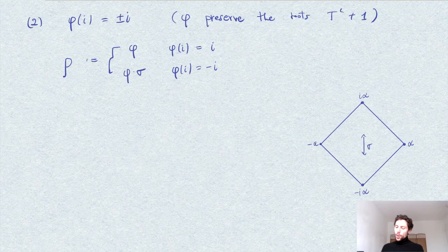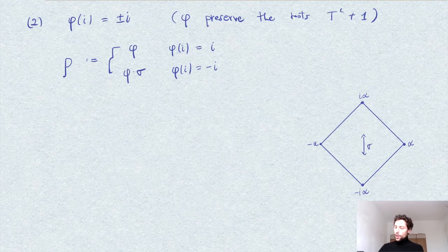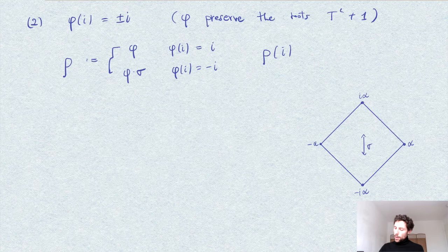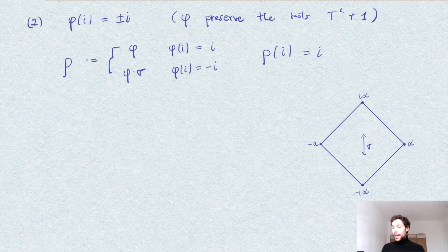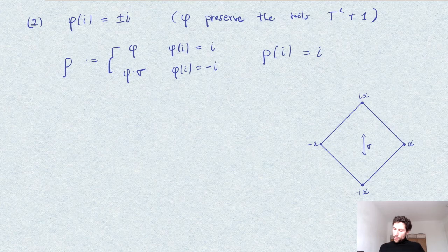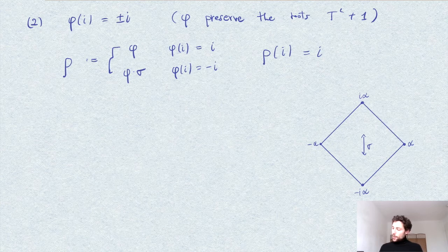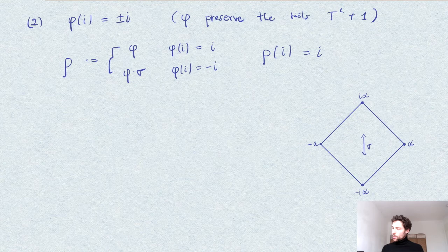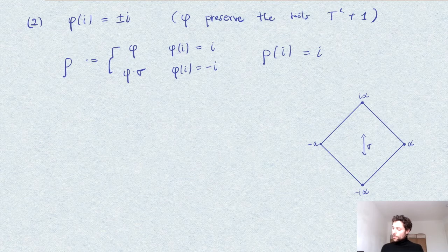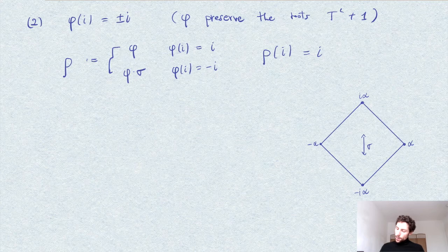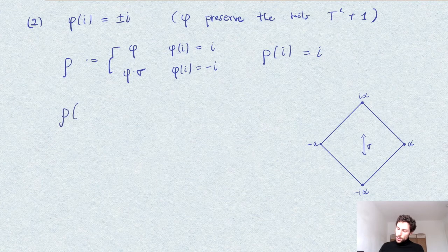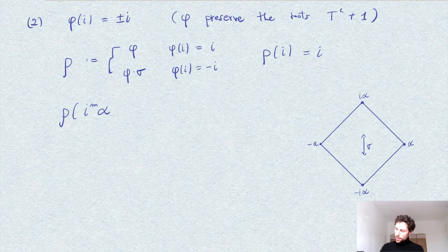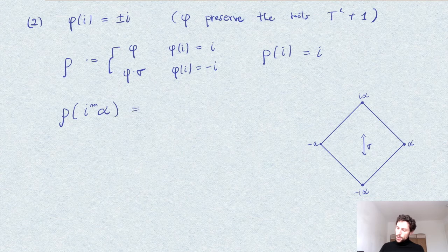So you see that in both cases, rho acts on i as the identity in the first case, and also in the second case sends i to itself. So you see that, how does rho act on this square with the roots of f? It will send, if you then algebraically, you see that any power, so any element of our basis, let's write it like this, then this will be i power m times rho of alpha, which will be i alpha.